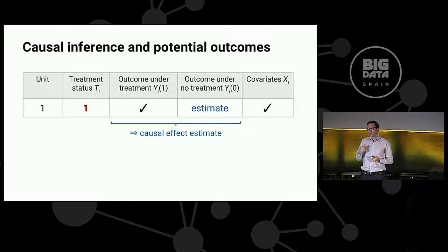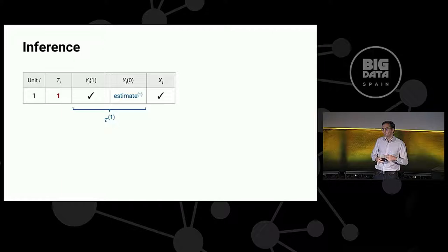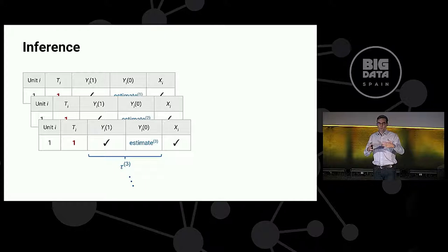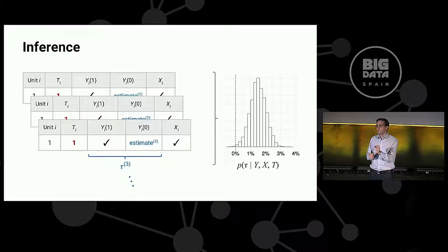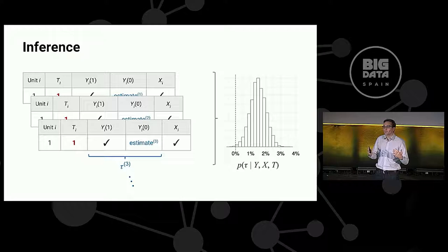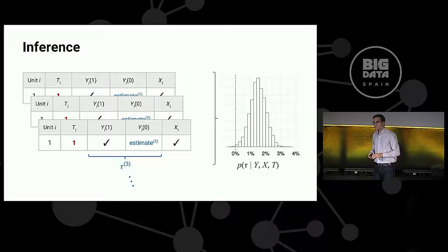So all of the machinery is going to go into estimating that counterfactual using statistical models, deep learning models, you name it. Inference is going to proceed by doing this repeatedly. So on the first iteration, we get one estimate and we repeat that across iterations so that across all of these iterations, we get a distribution of our causal effect because that's really what we're interested in, a distribution that tells us here's our posterior mean, a point estimate of the causal effect, and we can use that same distribution to quantify something like a credible interval or a confidence interval about our effect.